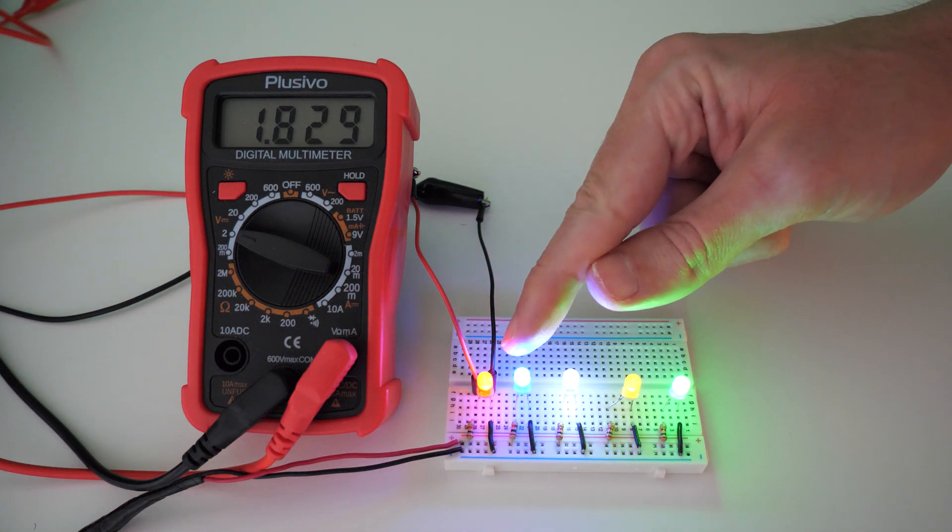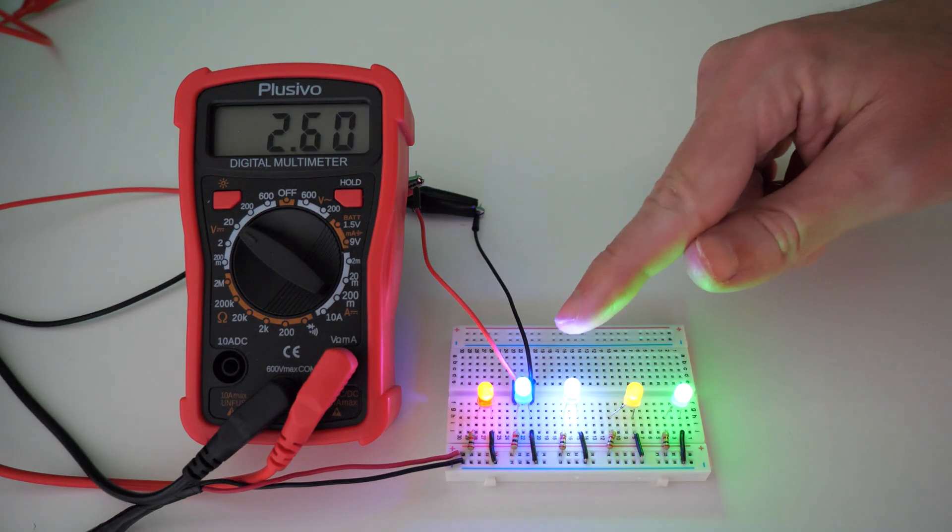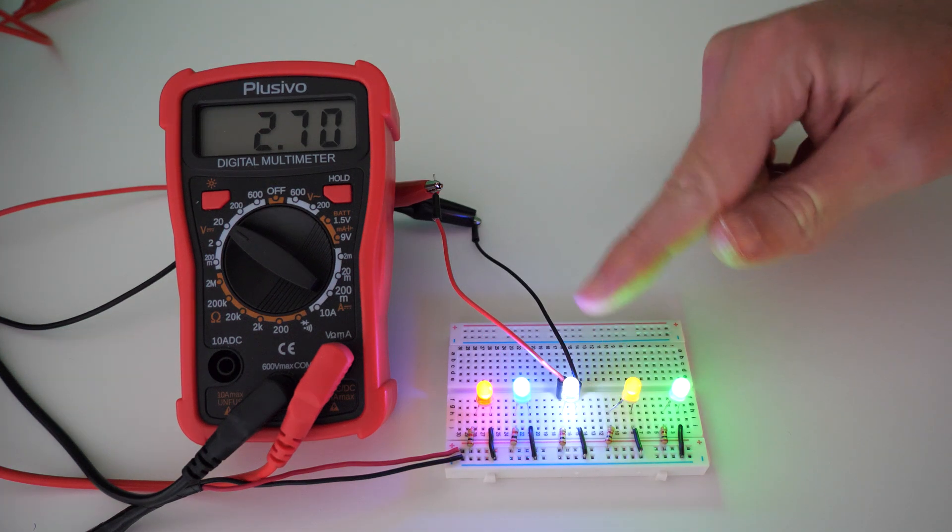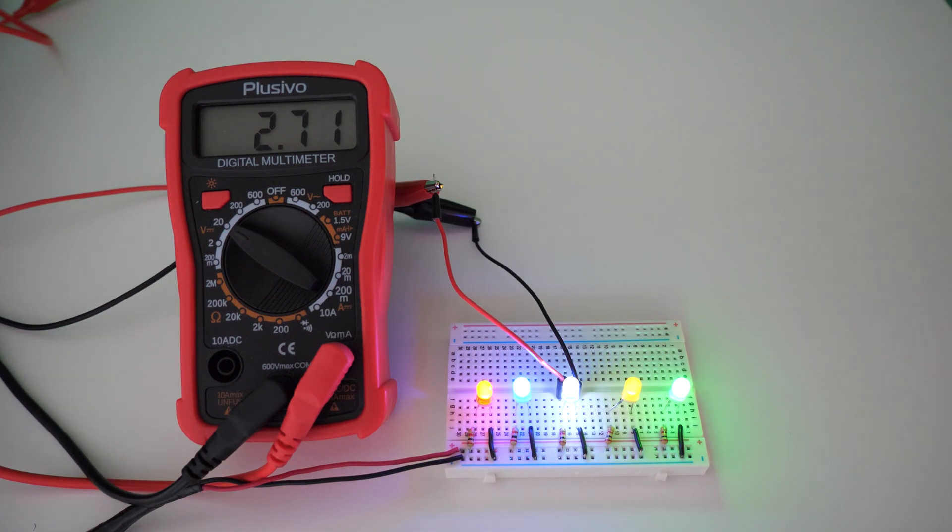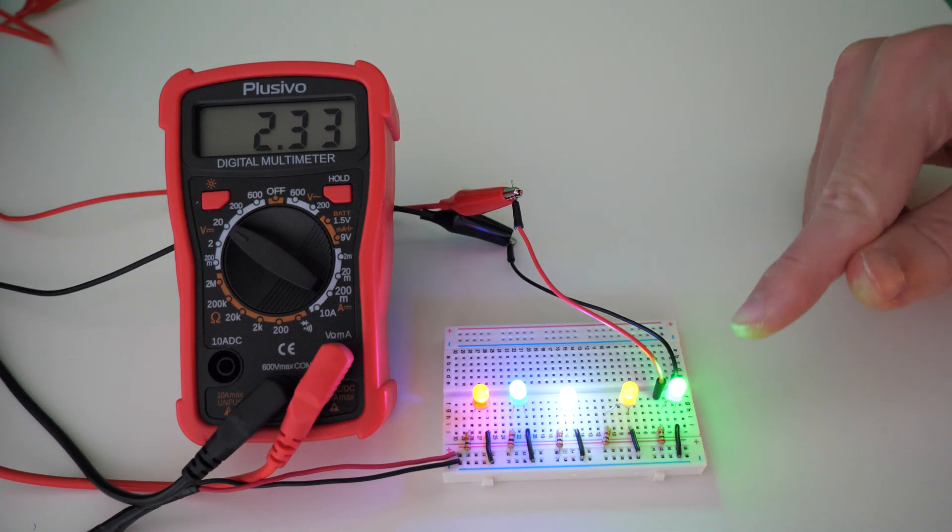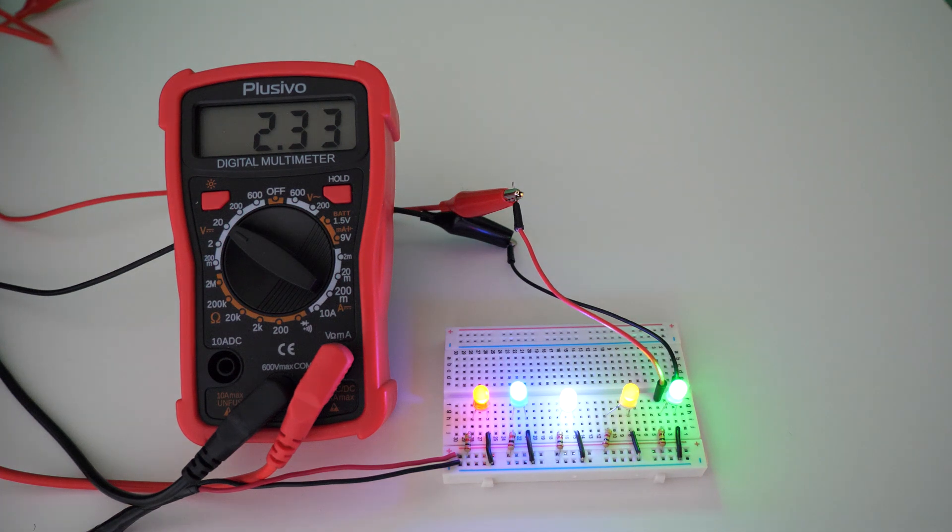And now we're going to check out what the voltage drop value is across each LED. So for the red LED, the voltage drop is 1.829 volts. The blue LED is 2.6. The white LED is 2.71. The yellow LED is 1.88. And finally, the green LED is 2.33 volts. And now you know that the forward voltage drop across different color LEDs actually have different values.